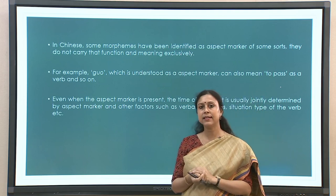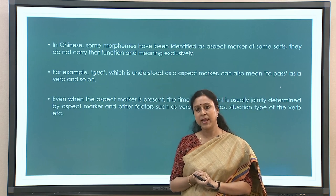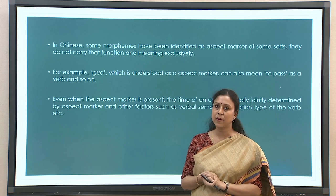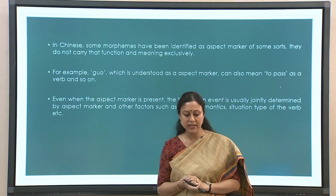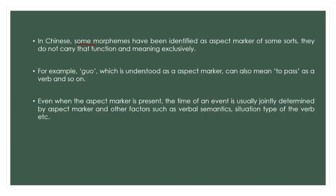Chinese has been studied extensively to look at how non-linguistic performance works out. In Chinese, some morphemes have been identified — one is the 'guo' morpheme, sometimes used as an aspect marker. But unlike English, which has dedicated markers for tense and aspect, Chinese morphemes like this can also mean other things like 'to pass' as a verb. Even when aspect markers are present, the timing of an event is determined by the aspect marker along with other factors like verbal semantic situation type.